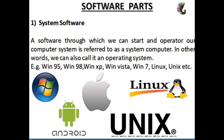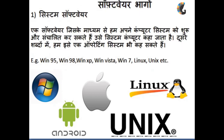Examples of system software are: Windows 95, Windows 98, Windows XP, Windows 7, Linux and Unix. Besides these, we also use Android and iOS on our phones. These are all types of operating software.